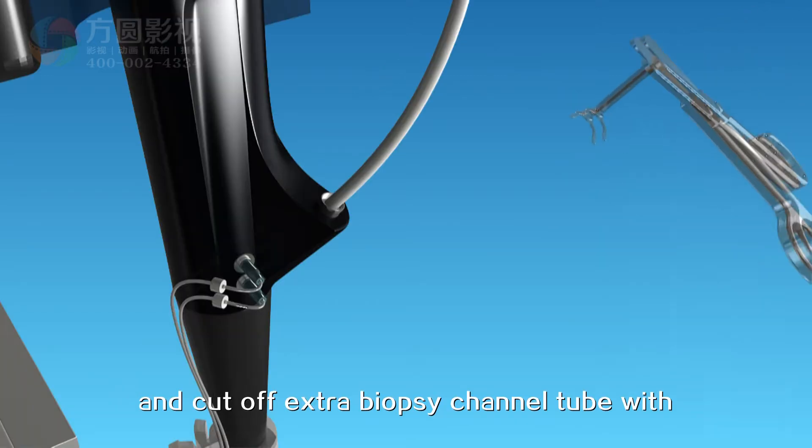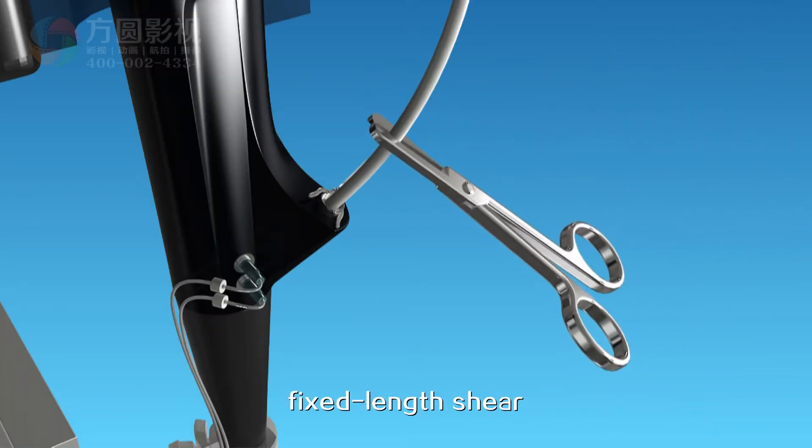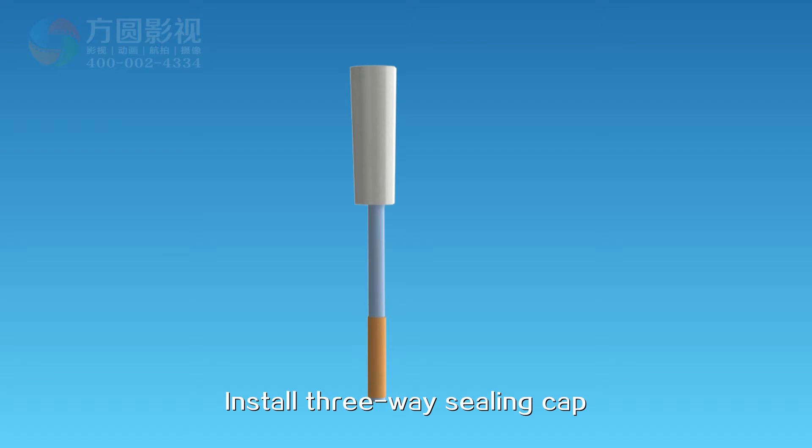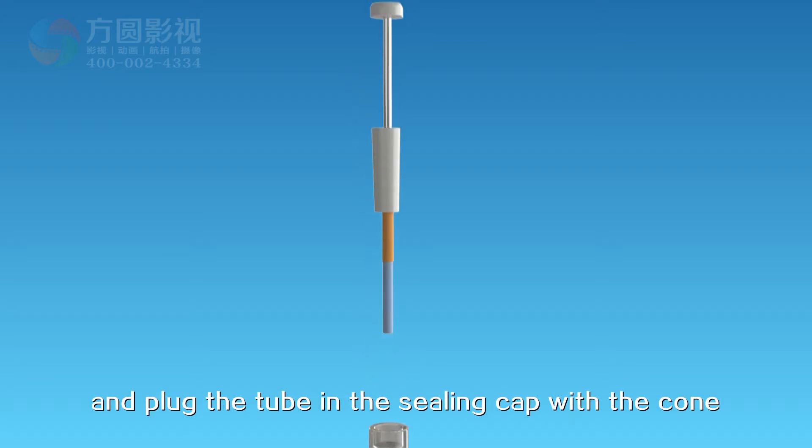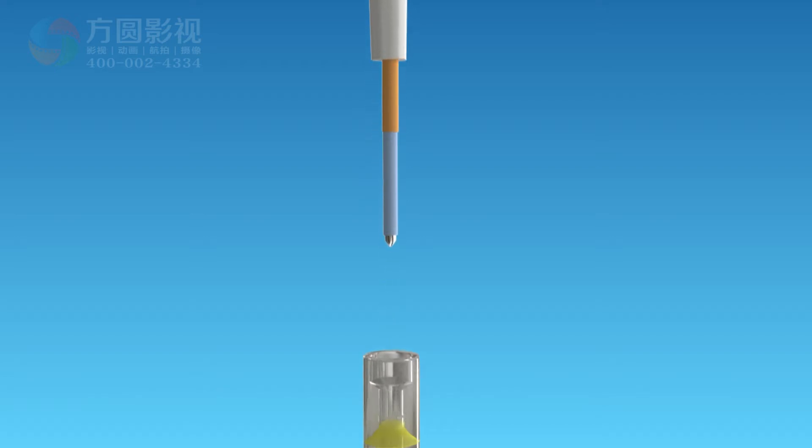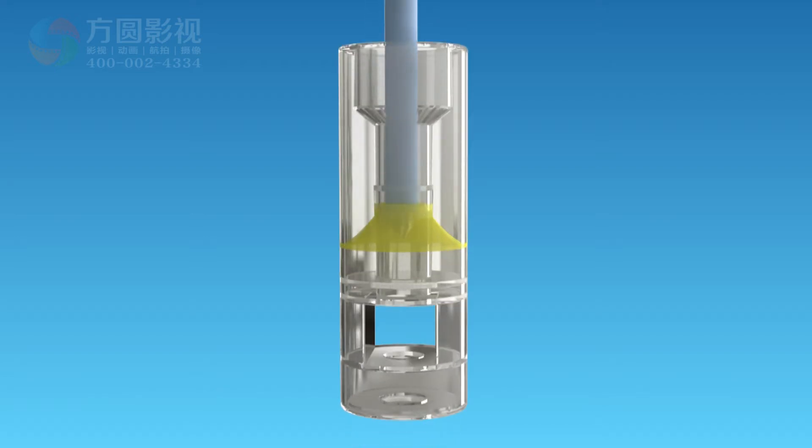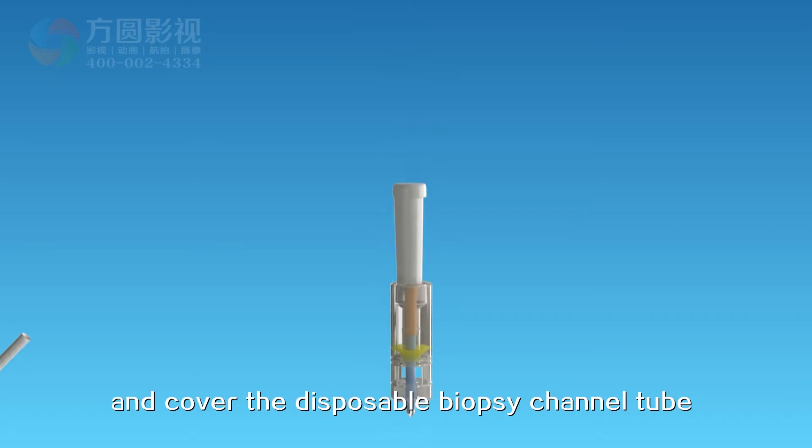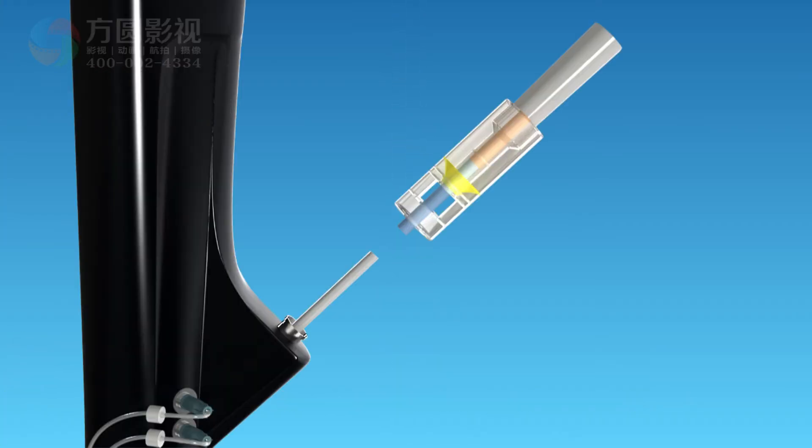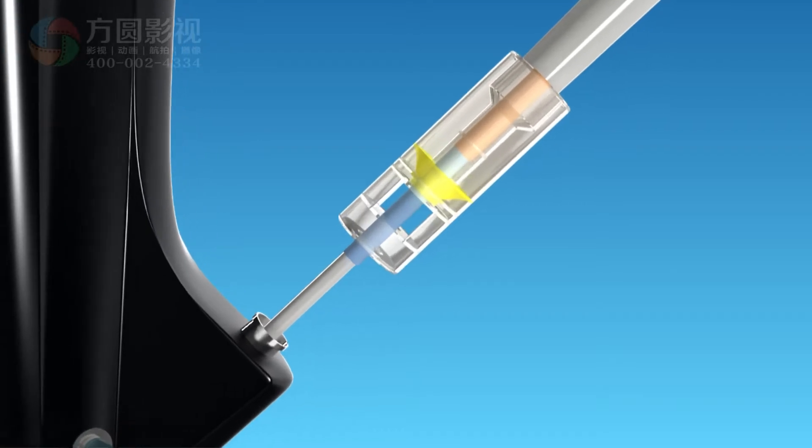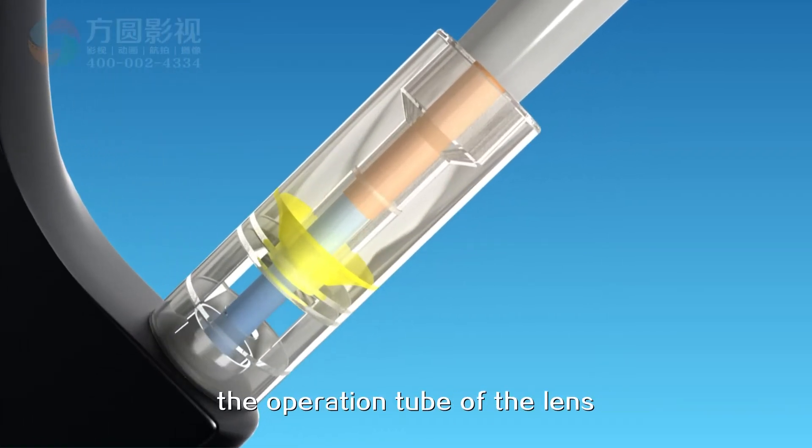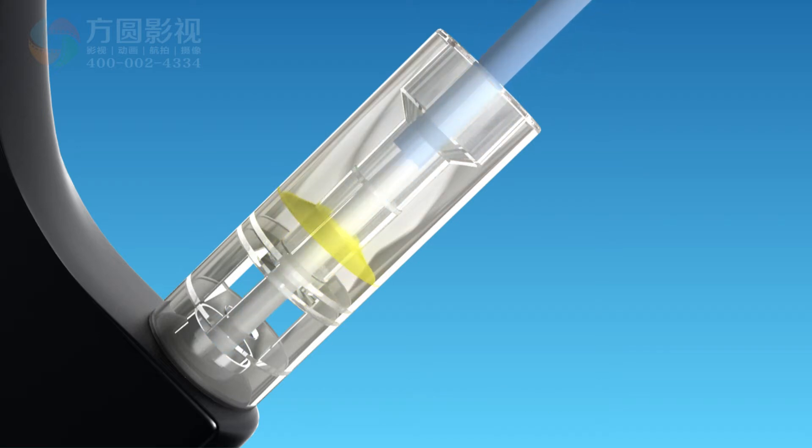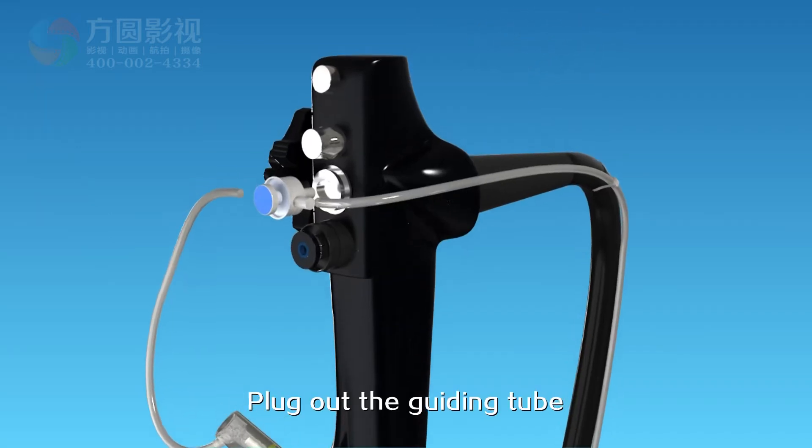Cut off extra biopsy channel tube with fixed length shear. Install the three-way sealing cap. Plug the guide cone in the tube and plug the tube in the sealing cap with the cone, then pull out the cone and cover the disposable biopsy channel tube with the front end of the guiding tube. Fix the three-way sealing cap outside the operation tube of the lens, pull out the guiding tube.